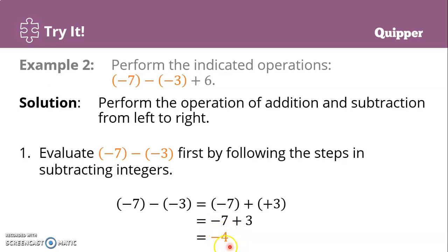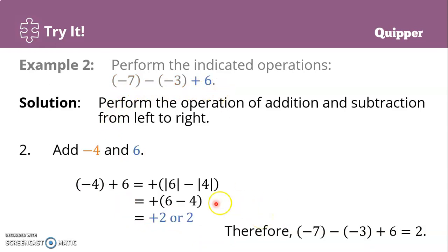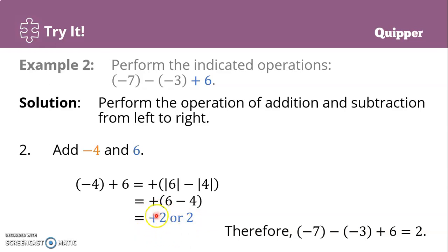Take note that negative 4 is just the difference of the first two numbers — we still have to add 6. Adding negative 4 and 6: the absolute value of 6 minus the absolute value of 4 is 6 minus 4, which equals positive 2, or simply 2. Therefore, negative 7 minus negative 3 plus 6 equals 2.